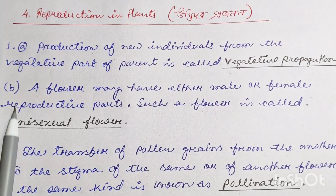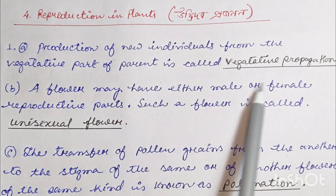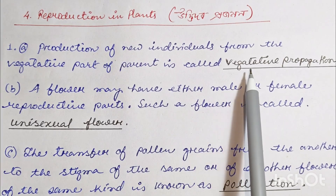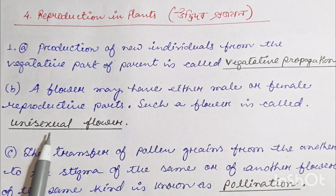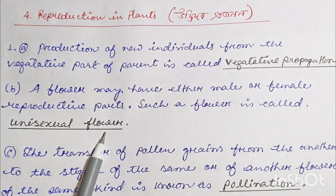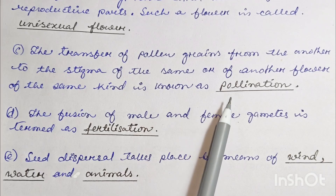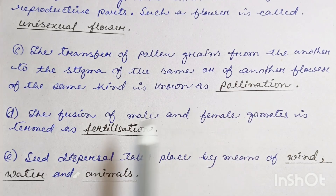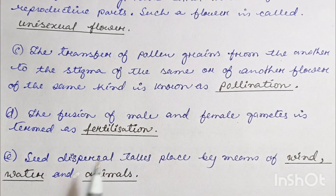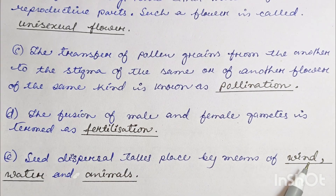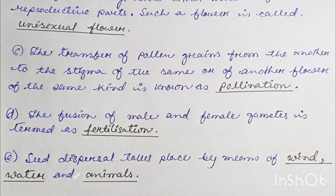To summarize the answers: vegetative propagation, unisex flower, pollination, fertilization, wind, water and animals.